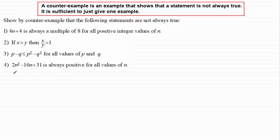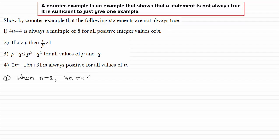So in order to disprove this statement, we just have to come up with one counter example that shows it's not always true. We can do that when we take n equals 2. When n equals 2, 4n plus 4 gives us 4 times 2 which is 8, plus another 4 is 12. Clearly not a multiple of 8, so we would state: not a multiple of 8.